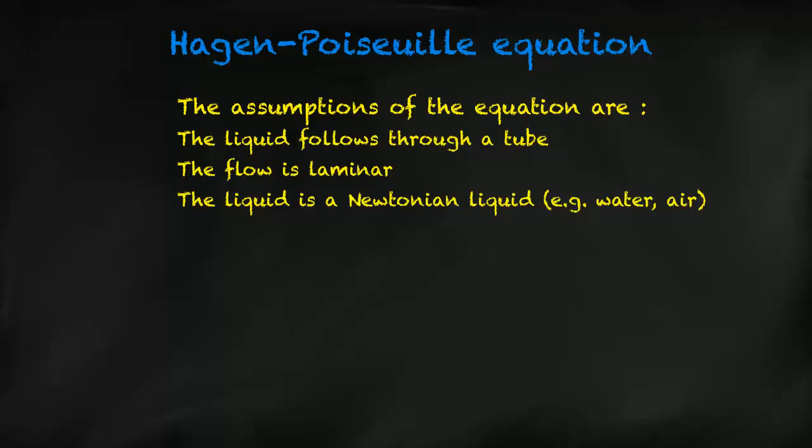Firstly, we must appreciate that there are a number of assumptions with the Hagen-Poiseuille equation. This equation describes the flow of a liquid through a circular tube only. The flow is laminar and the fluid itself is a Newtonian liquid, for example, like water and air.